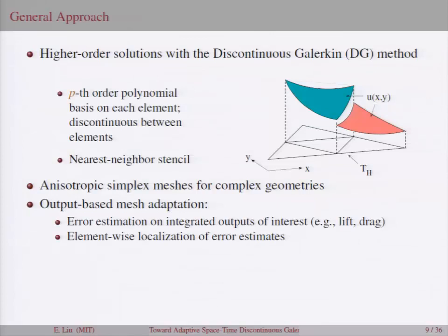The whole idea of the discontinuous Galerkin finite element scheme is where we want to represent high order solutions over a bunch of elements that can divide up our domain. And on each element, we have a piecewise polynomial representing the solution. And we allow the solution to be discontinuous between elements. And what this gives us is a nearest neighbor stencil, which is nice for implementation and parallelism. We'll also be working with simplex, or the triangular and tetrahedral elements, because they can mesh complex geometries and obtain arbitrary levels of anisotropy. And we'll be driving the whole process with output-based adaptation.